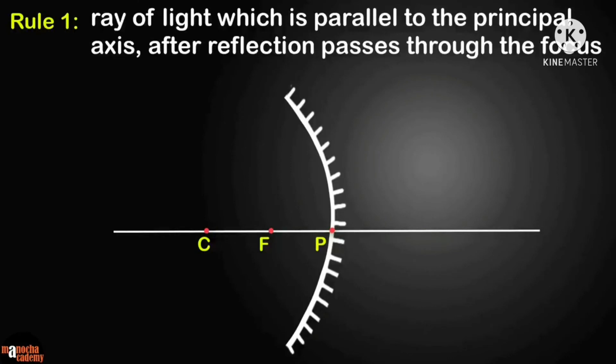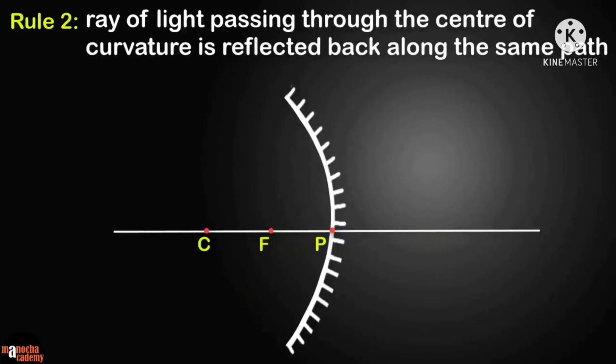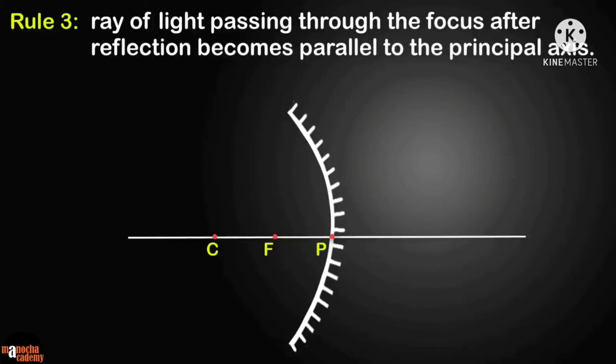What are the rules for a concave mirror? Let's take a look. Rule 1: a ray of light which is parallel to the principal axis, after reflection, passes through the focus. Rule 2: a ray of light passing through the center of curvature is reflected back along the same path.